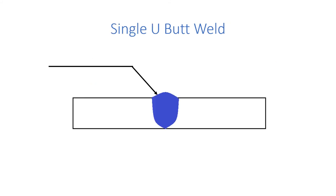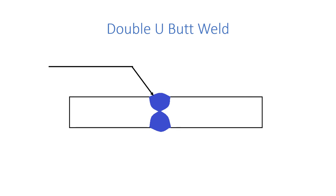Next is single U butt weld. We are showing a weld on the arrow side, so we will put it downwards with the convex surface — like this. This is the single U butt weld. Next is W butt weld — for that the symbol is like this, with convex reinforcement on both sides.